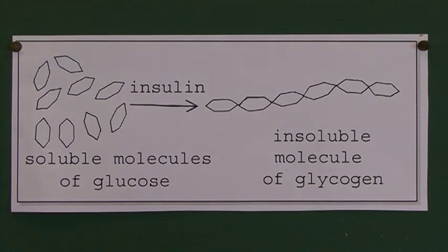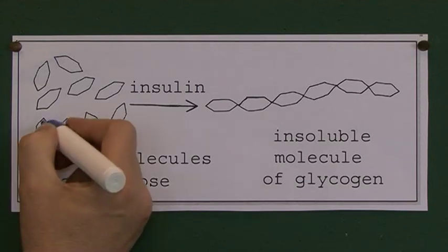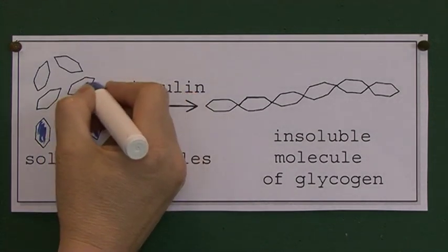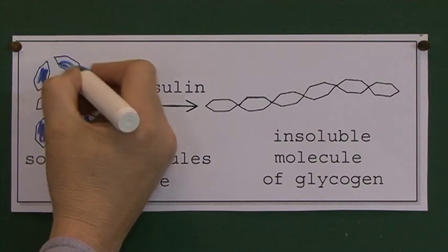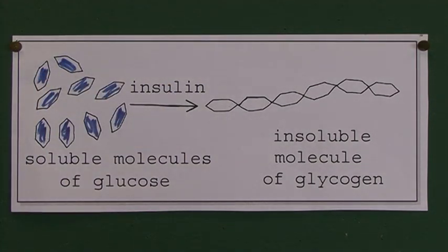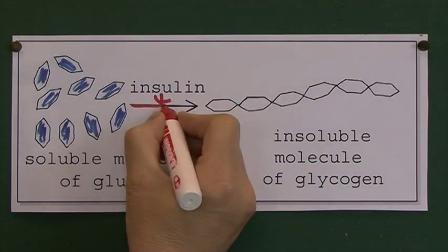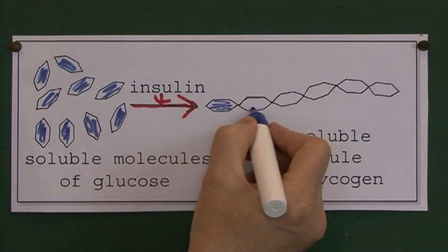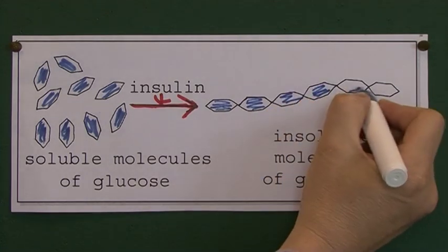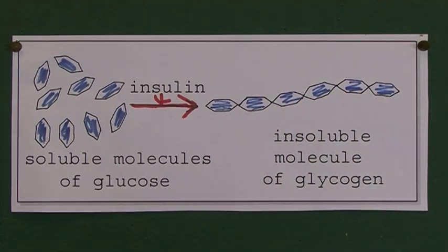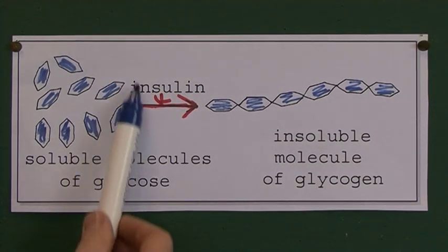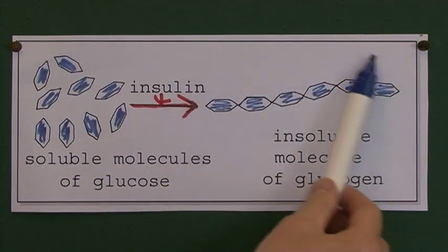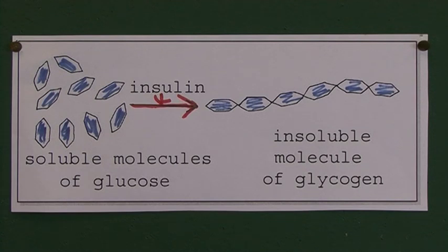This diagram is indicating the action of insulin. Here we've got lots of individual soluble glucose molecules in the blood and tissue fluid. When they're acted on by insulin, the insulin will convert the individual glucose molecules into a long chain of molecules. One of these long molecules is called a glycogen molecule. So the glucose will be moved from the blood and tissue fluids into glycogen molecules, where it will be stored in the liver and muscles.